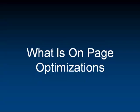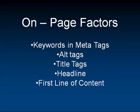On-page optimization is just a few basic simple factors that you want to do on every one of your pages. You have to know what keyword you're targeting. You need to know your keywords and your meta tags, your alt tags — your pictures, anything like that should have alternate tags of your keywords. Title tags, headline, first line of content — all those should contain your keywords.